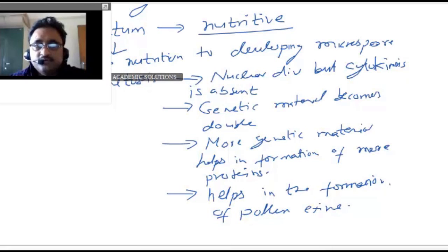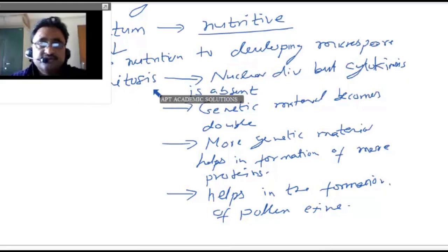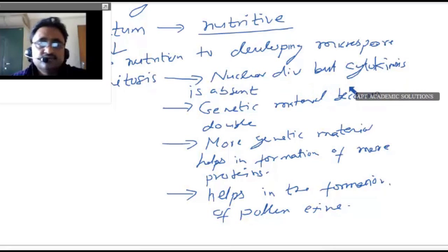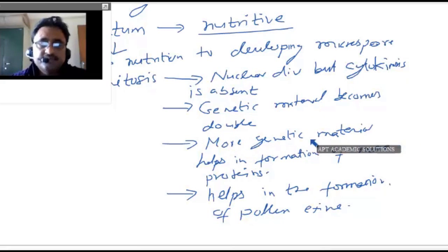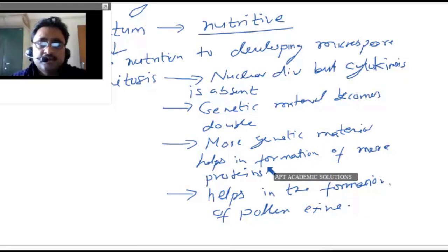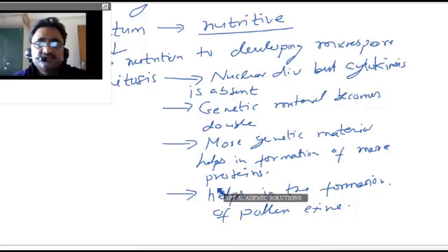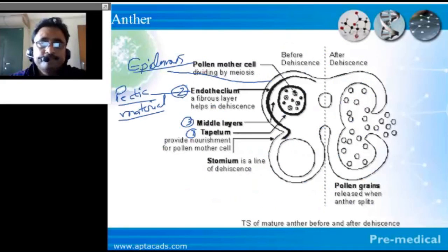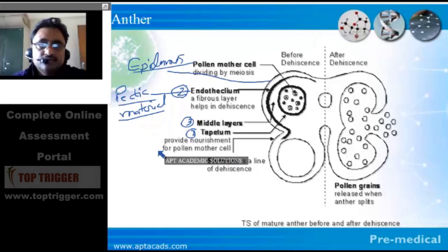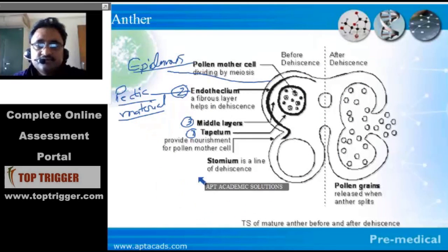To summarize: tapetum is known for providing nutrition to developing microspores. It undergoes endomitotic cell division where nuclear division occurs but there is no cytokinesis. The number of genetic material or chromosomes increases, which helps in the formation of more and more proteins. Another important function of the tapetum is that it also helps in the formation of pollen toxin. This is how the anther looks.